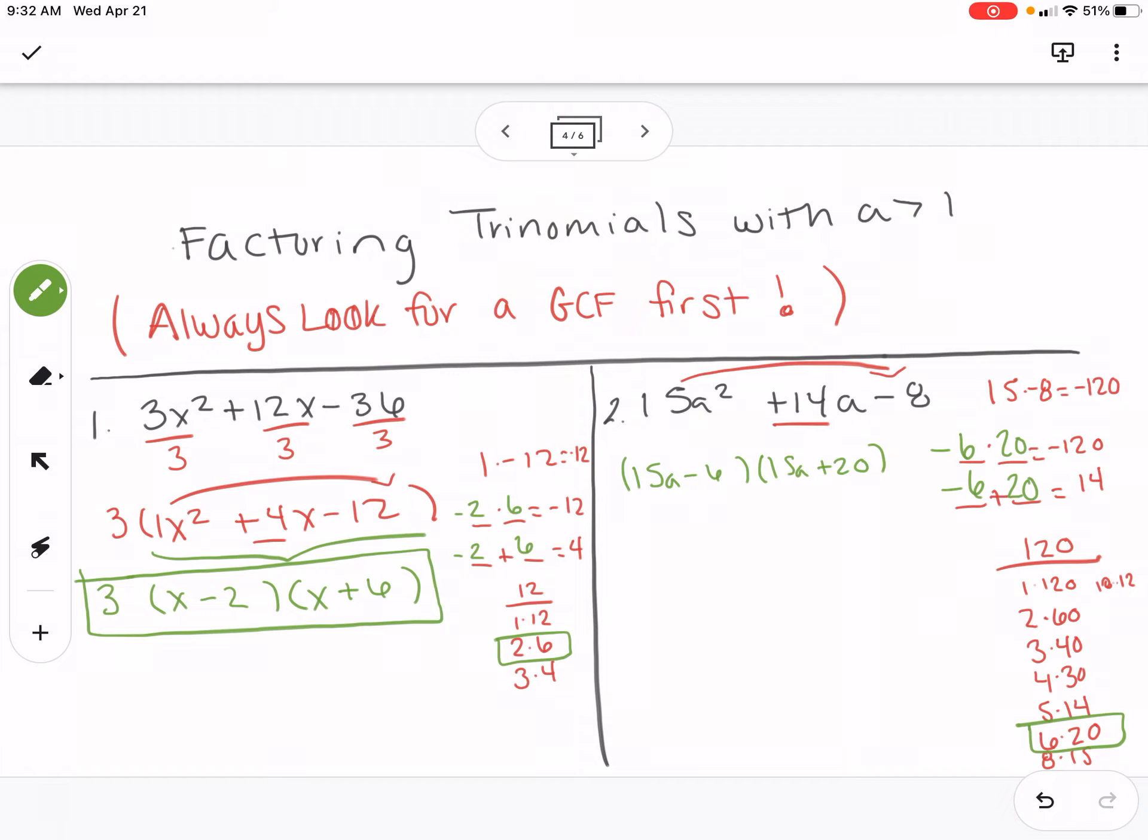Again, it doesn't make sense yet. If you were to multiply these, you wouldn't get what we started with. So what you're going to do now is actually divide out a greatest common factor. This one, both 15 and 6 can be divided by 3. So you do that, you end up with 5a minus 2.